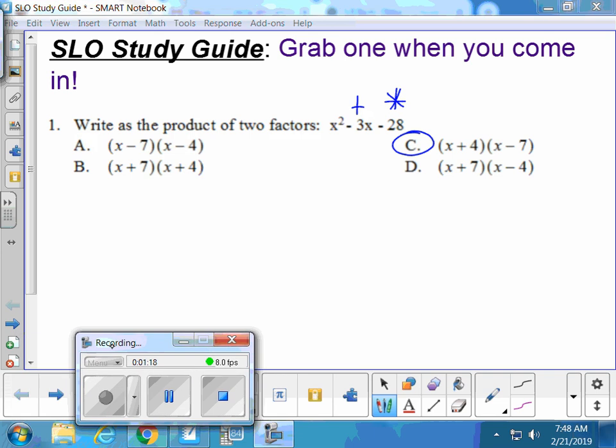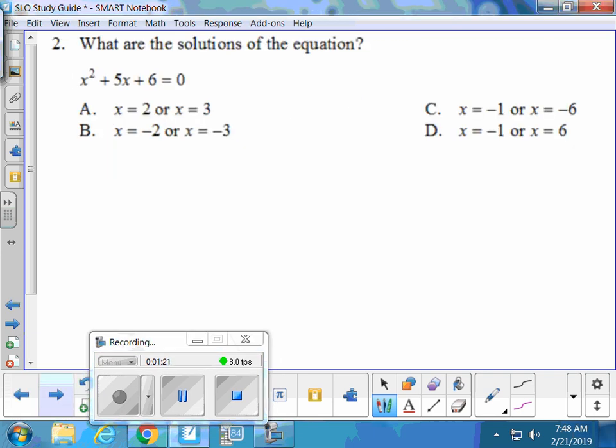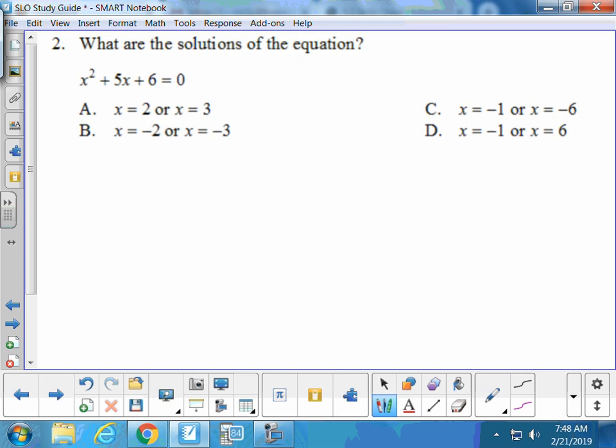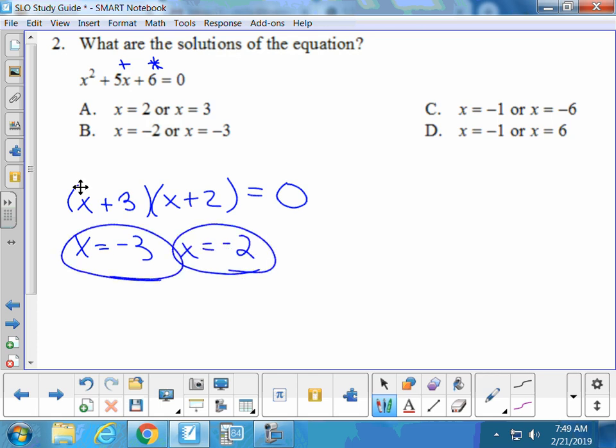Number two. What are the solutions of this equation? You could definitely plug and chug. This is a multiple choice problem. I'm just going to do it the math way because I'm a math teacher. What numbers multiply to six that add to five? Three and two. And that makes our solutions negative three and negative two. I think doing it the math teacher way is quicker than plugging and chugging because people don't use their parentheses correctly.